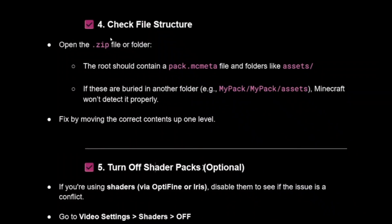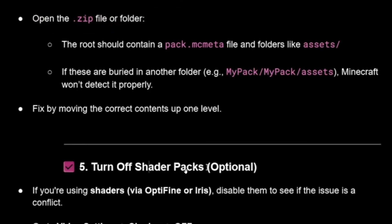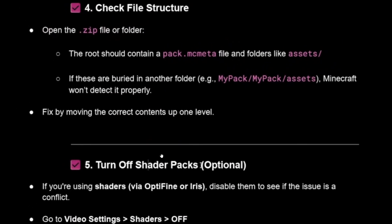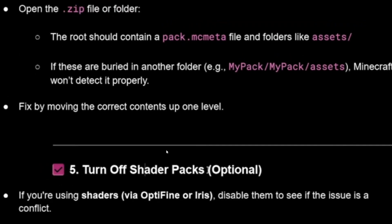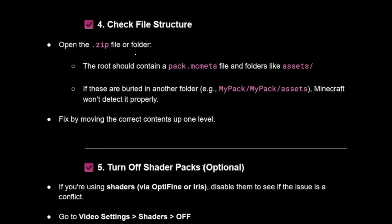The last two options are to check the file structure and to turn off shader packs. If you're using shaders, disable them to see if the issue is a conflict or a graphic issue — go to Video Settings > Shaders and turn them off. For the file structure, open the zip file and make sure the root contains a pack.mcmeta file and an assets folder. If they are nested inside another folder, Minecraft won't detect it properly. You can fix this by moving the contents up one level.